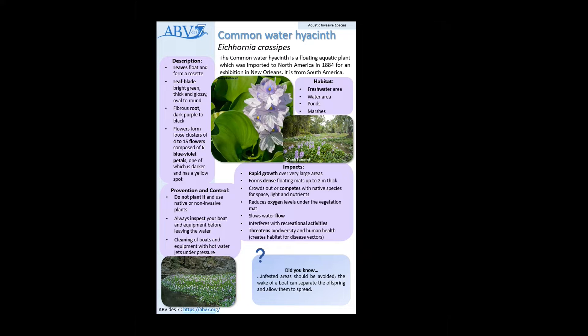The plant has rapid growth and can spread over very large areas, forming very dense mats up to two meters thick. It is a competitor that crowds out native species for space, light, and nutrients, and also reduces oxygen levels under the vegetation mat.